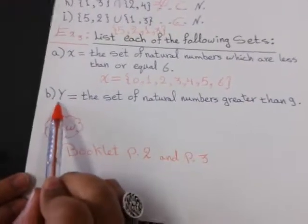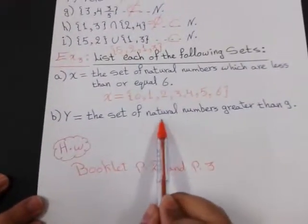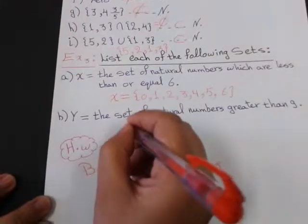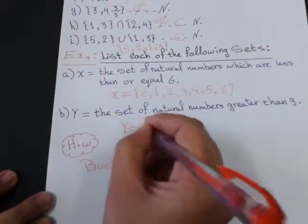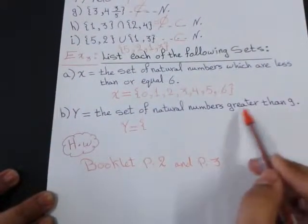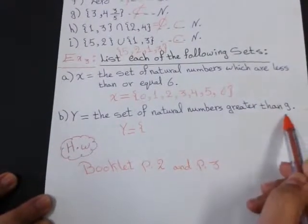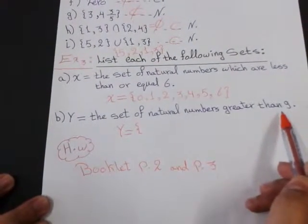Type. List. Y equals braces. Greater than 9. He asked me to equal 9. No. So, I will skip 9 and count after 9.